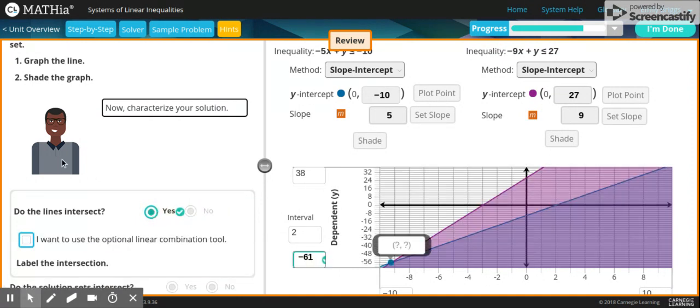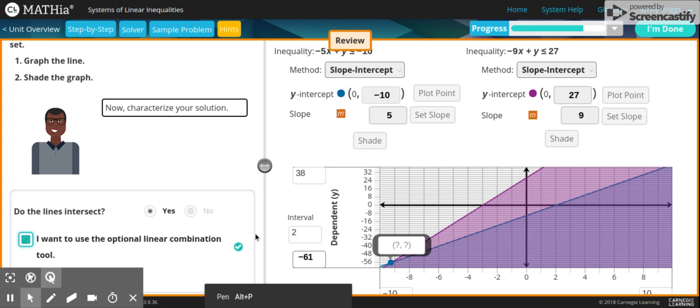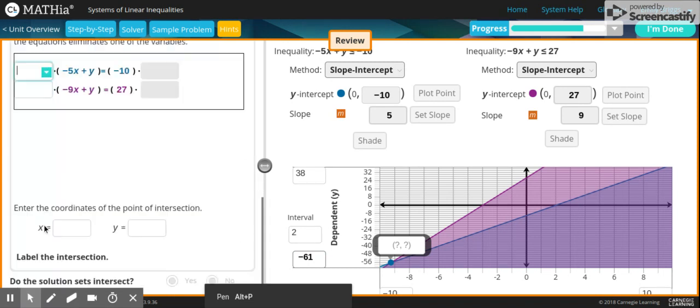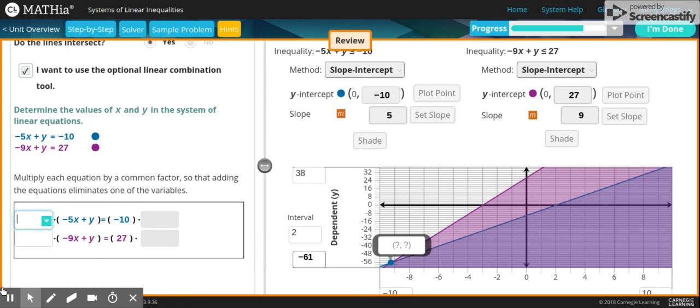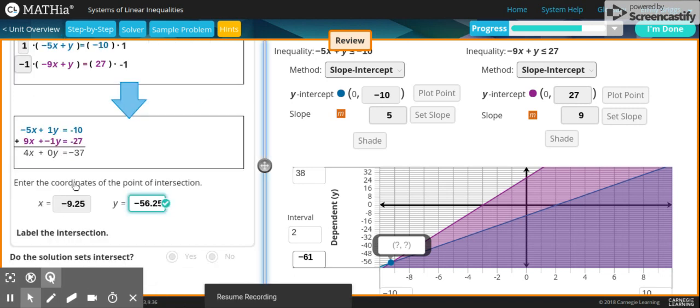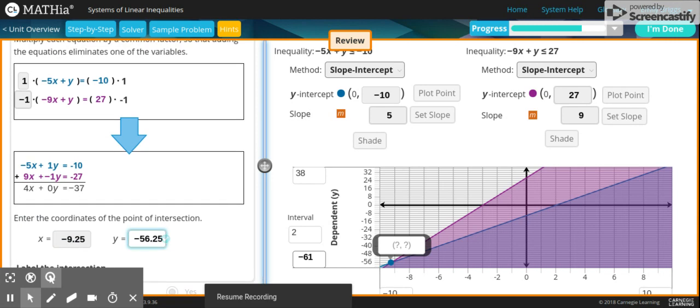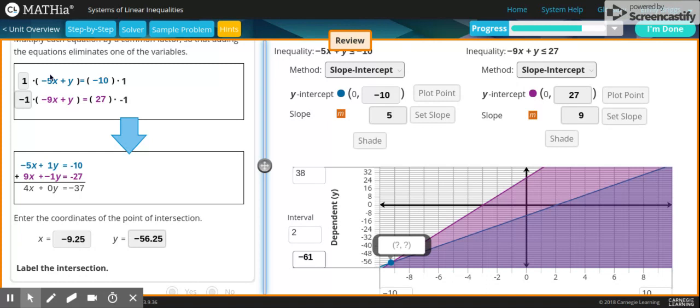I always say that I want to use the optional linear combination tool. So I will finish this up. The correct answer is that you put in for what you're going to multiply it by is 1. You always do it times 1, and then you do the opposite, so it would be negative 1 is the opposite.